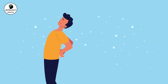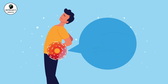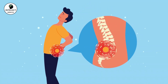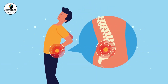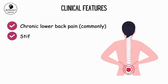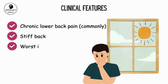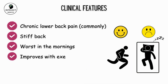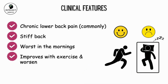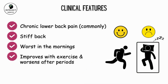The patient is usually young and presents with chronic lower back pain radiating to buttocks and stiffness which is of insidious onset. Stiffness is mostly worse in the morning for more than 30 minutes. It improves with exercise and worsens after periods of inactivity.